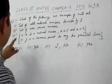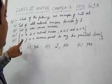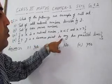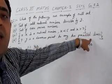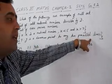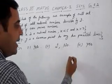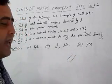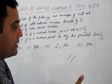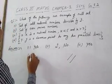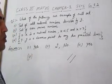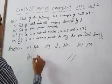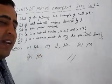The fourth part is: y such that y is a common point to any two parallel lines. We know that parallel lines do not intersect each other — these are two parallel lines, they do not intersect. Therefore there is no common point to two parallel lines, and it is an example of null set.